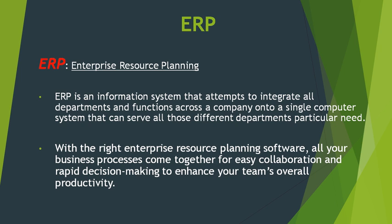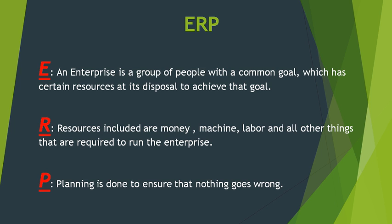ERP is a centralized business process which connects each module of the business, from which we can get real-time information. In ERP, E stands for Enterprise — an enterprise is a group of people with a common goal which has certain resources at its disposal to achieve that goal. R stands for Resources, which includes money, machines, labor, and all other things required to run the enterprise. P stands for Planning, which is done to ensure that nothing goes wrong. That's why it's termed Enterprise Resource Planning.